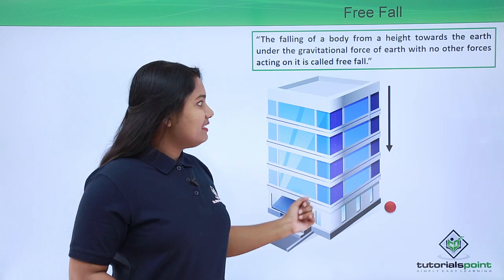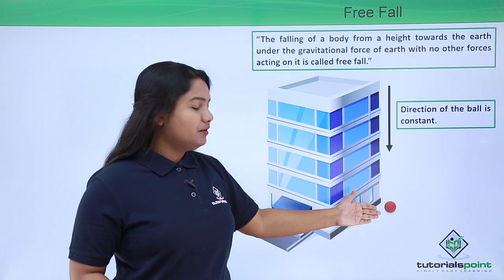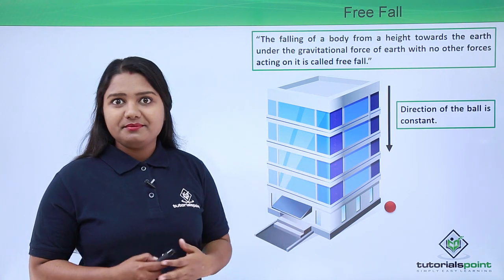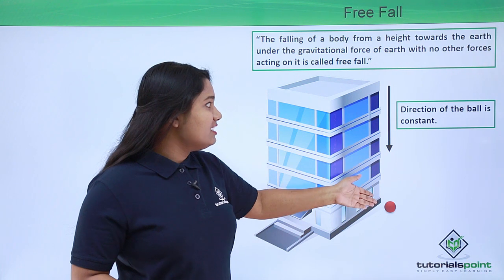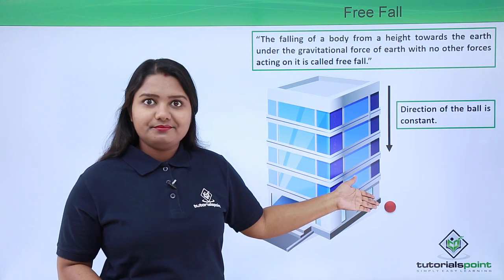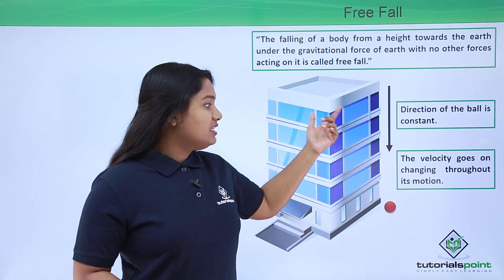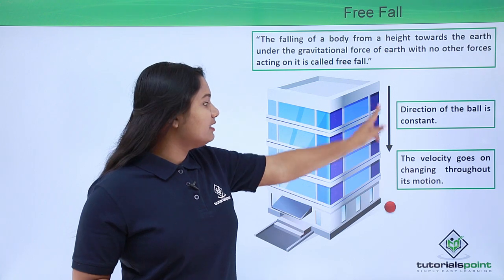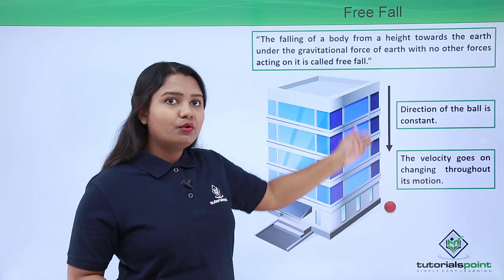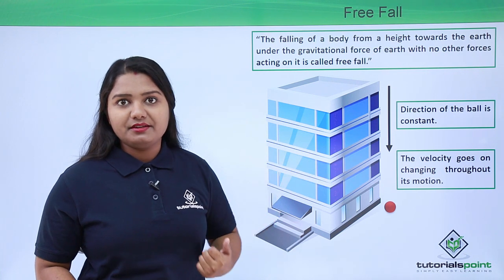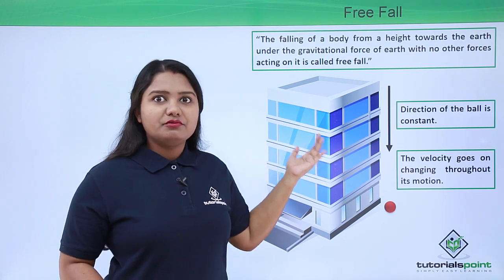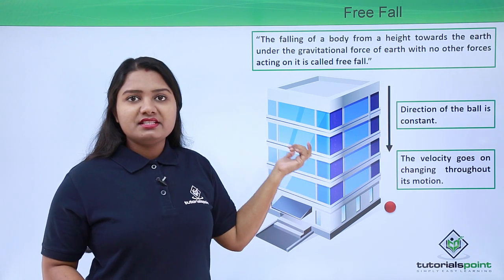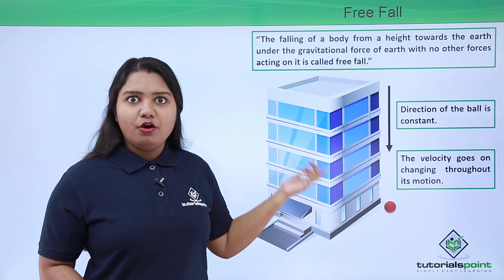In this case, we see that the direction in which the ball moves down is constant throughout its motion. But the speed of the body actually changes throughout its motion. Since there is no change in direction, speed is the only factor responsible for the change in velocity of this body.